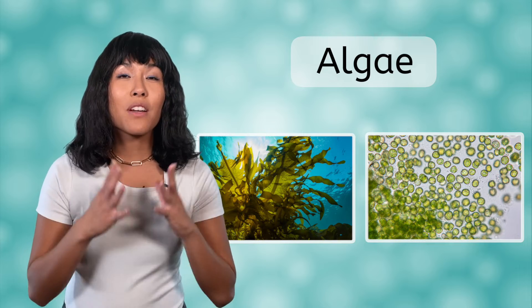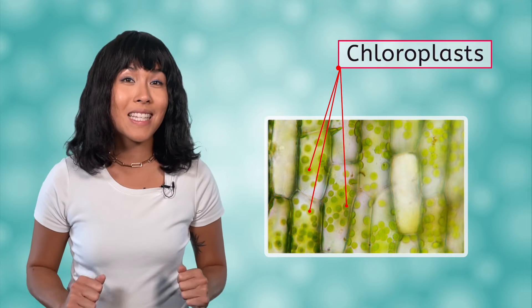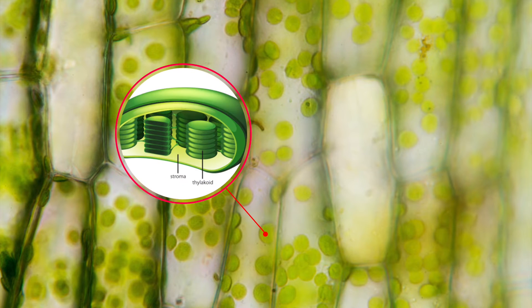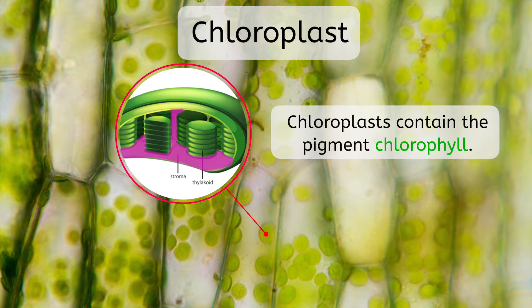Also like plants, algae are made of eukaryotic cells and contain specialized organelles called chloroplasts, where photosynthesis takes place. If we take a closer look at a chloroplast, we can see that it contains structures called thylakoids. The thylakoid membrane is a lipid bilayer, similar to those that make up cell membranes. Thylakoids in a chloroplast form stacks, as shown here. The region inside a chloroplast but outside of the thylakoids is called the stroma. As we'll see shortly, all parts of the chloroplast are important for photosynthesis. Chloroplasts are green because they contain the pigment chlorophyll, which absorbs light energy.